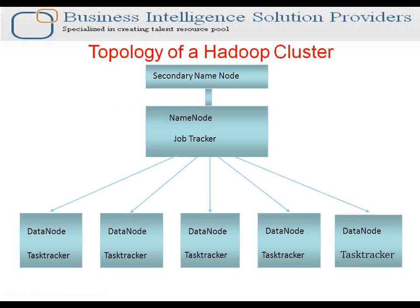The topology slide displays the same information graphically. The central machine is the master machine, on which the Name Node process and Job Tracker process are running. We also have a Secondary Name Node as backup. Apart from the master and backup master machine, there are five slave machines, and on each slave machine, the Data Node process and Task Tracker process are running.